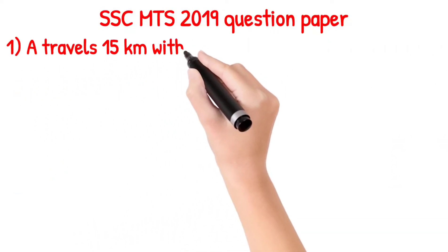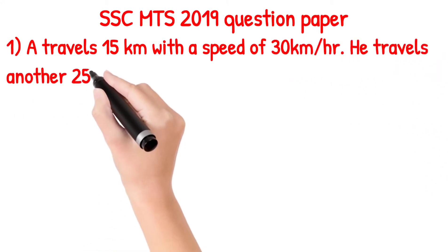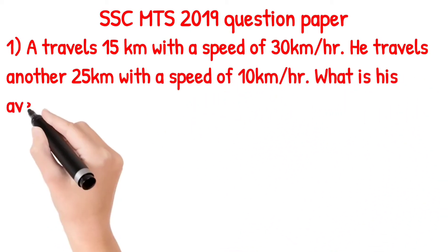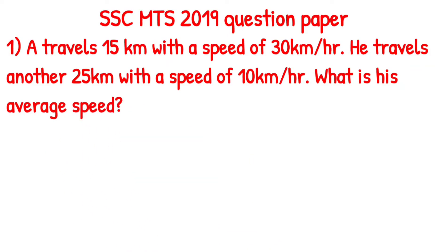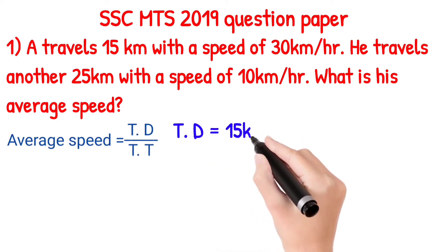First question: A travels 15 km with a speed of 30 km per hour, then travels another 25 km with a speed of 10 km per hour. What is the average speed? The formula is total distance divided by total time.